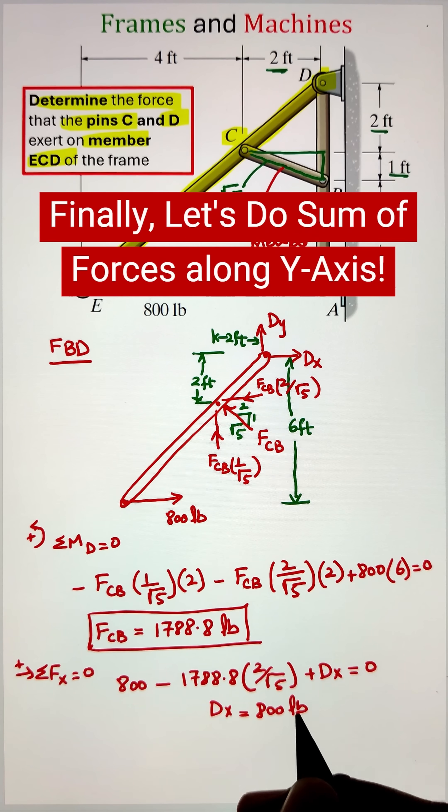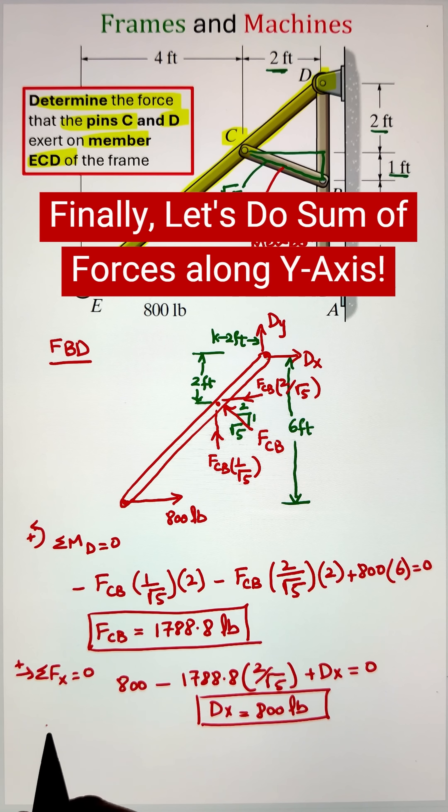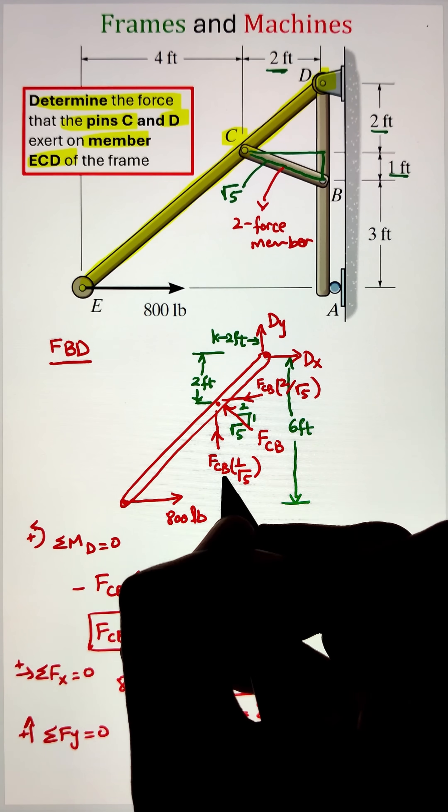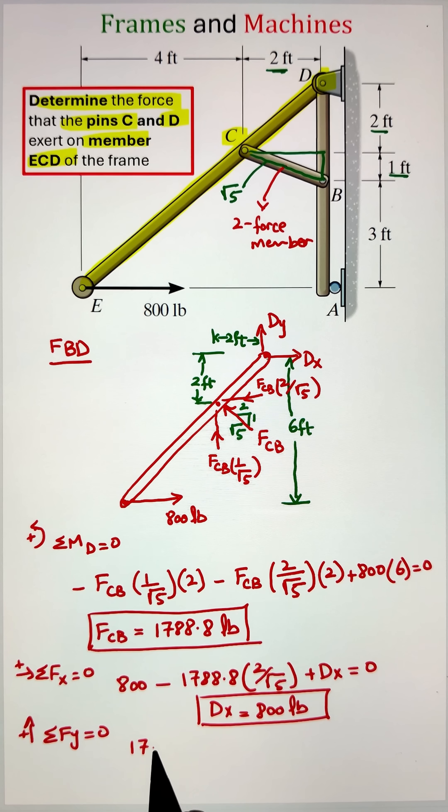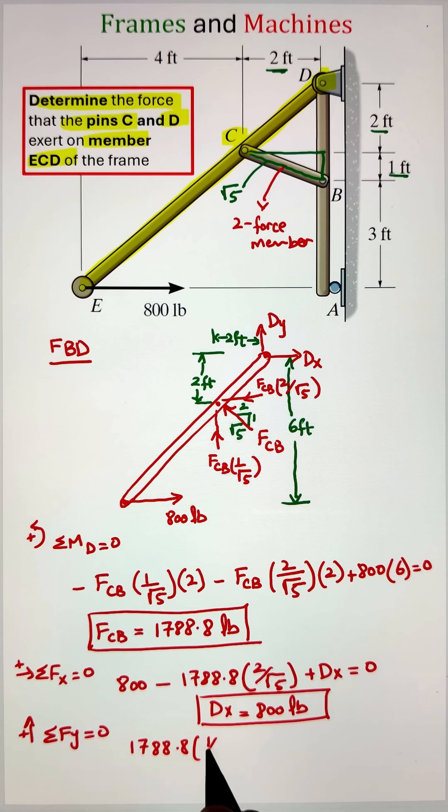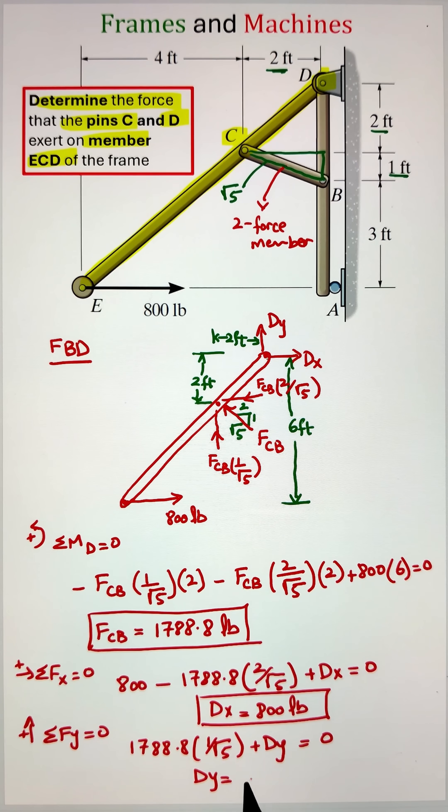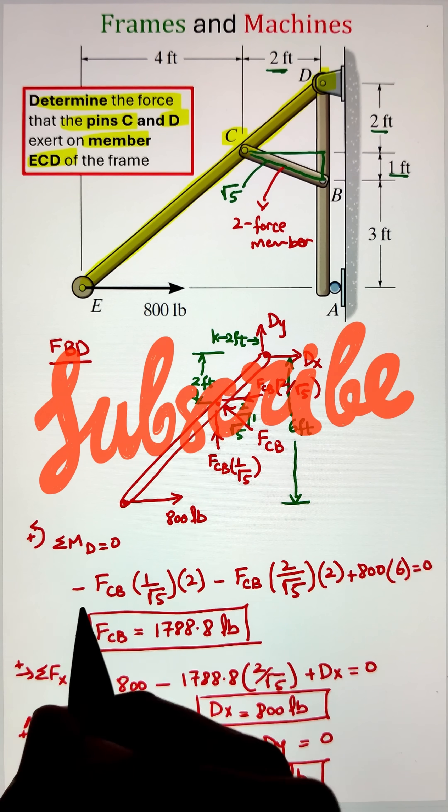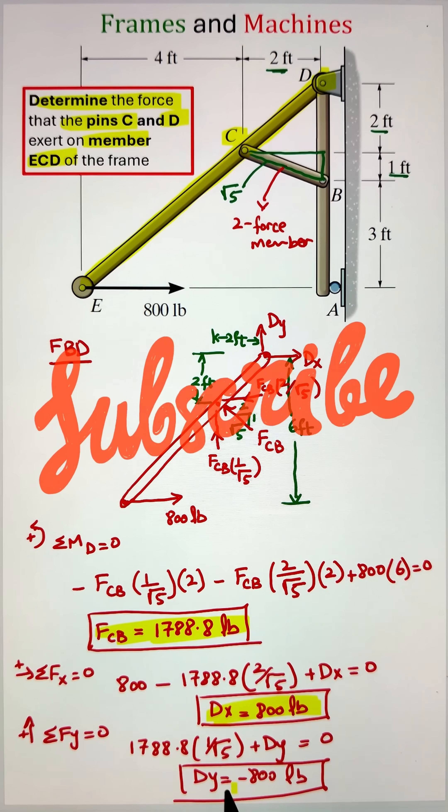Finally, we can apply our summation of forces acting along the z direction equals to zero and add all the loads acting along the z direction. Here I have the FCB component going vertically upward that can be calculated by multiplying 1788.8 with one over root five, plus I have my Dy going upward on my free body diagram. This gives us the value of Dy as negative 800 pounds.